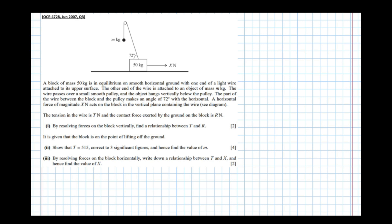The tension in the wire is t newtons, and the contact force exerted by the ground on the block is r newtons. Let's get all of this information on the diagram now. We know there's a contact force acting upwards of r.